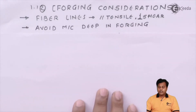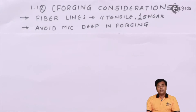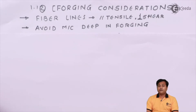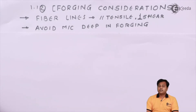The second consideration is to avoid machining deep into the forged material. After forging, thin fibers of the material are created. When we machine them — machining is done to create extra holes, impart surface finish, etc. — if we penetrate deep inside the forged material, there is an obvious chance that the fibers will be damaged. As the fibers are damaged, the strength of the molecules held together will be compromised. We can never compromise on the strength of the product, so avoid deep penetration while machining forged products as it will directly affect the fiber lines.